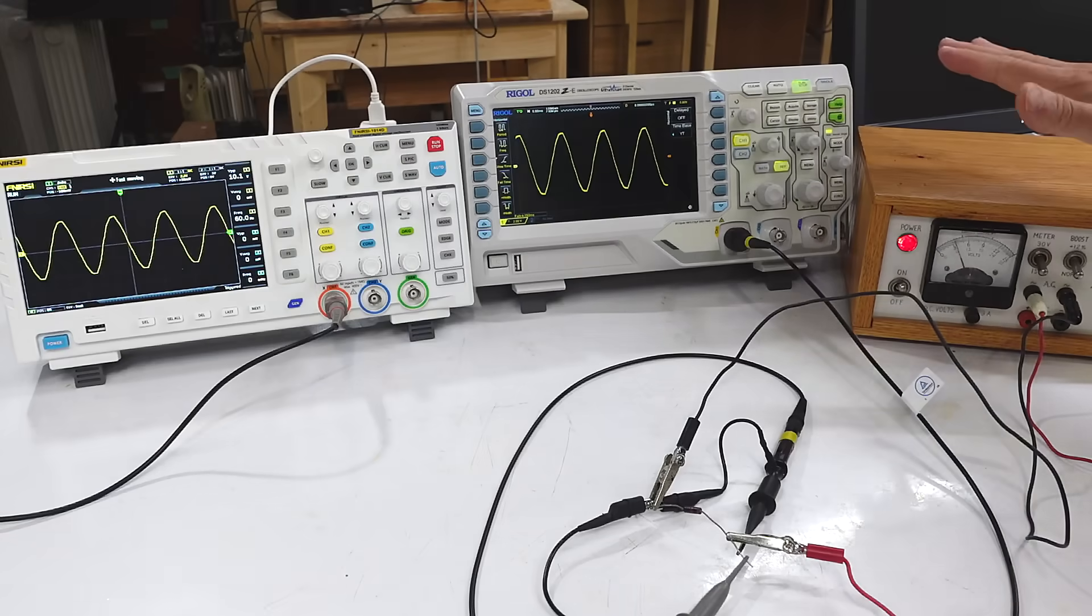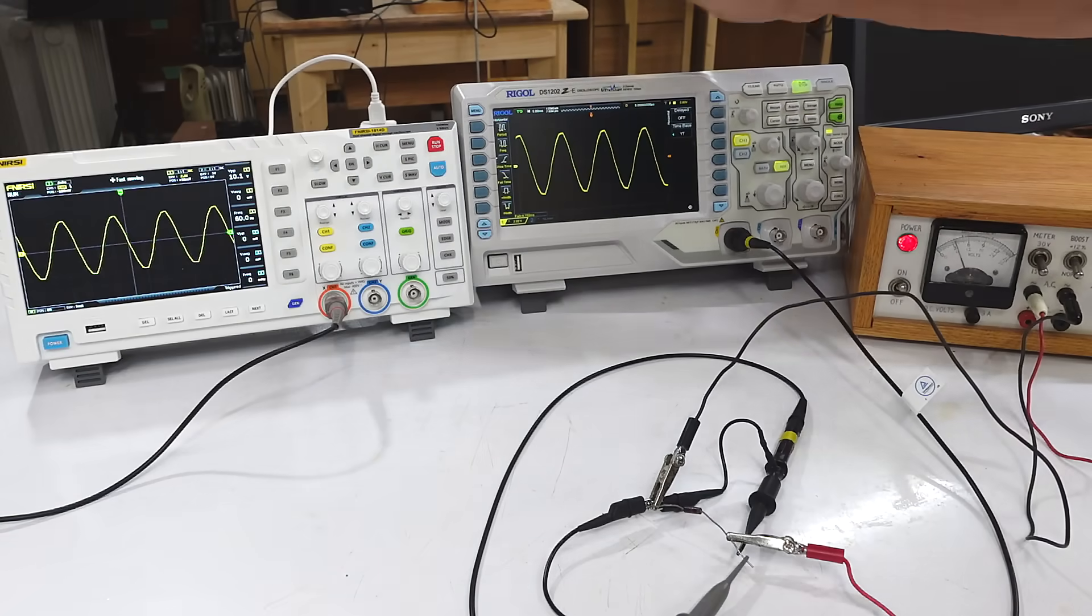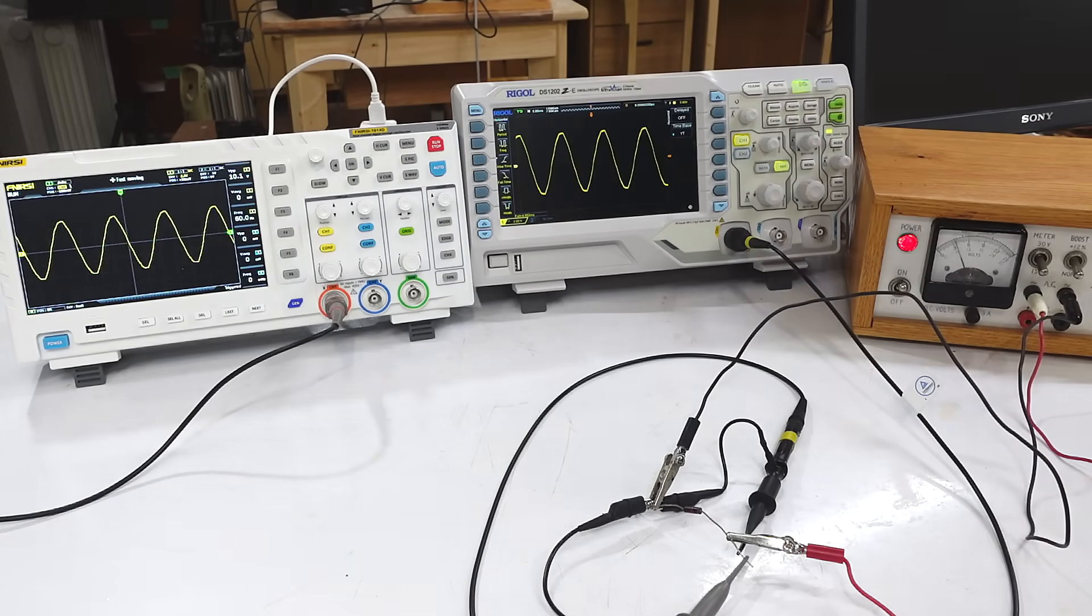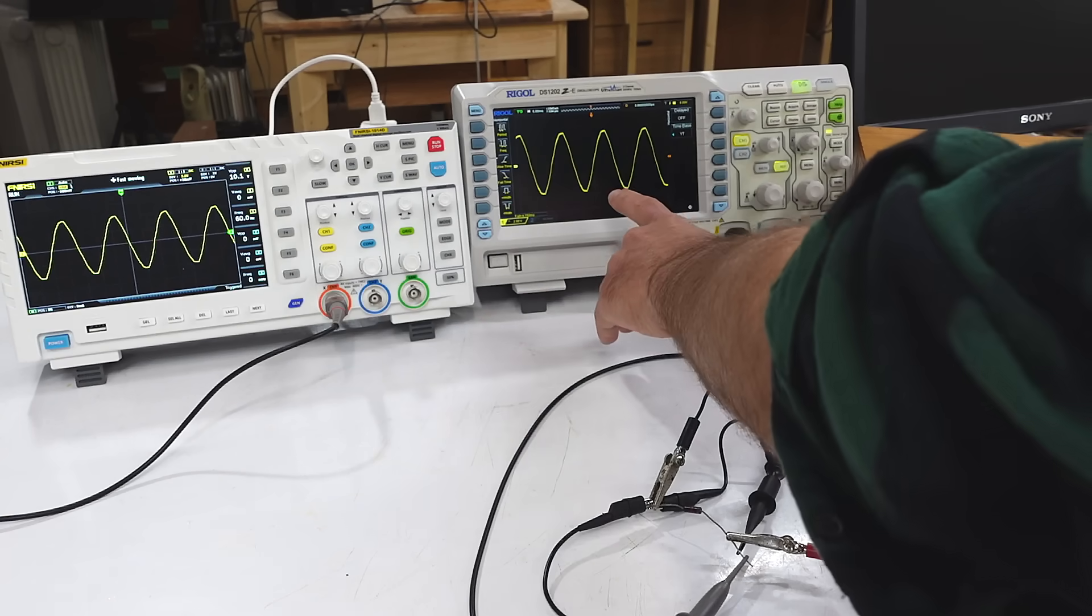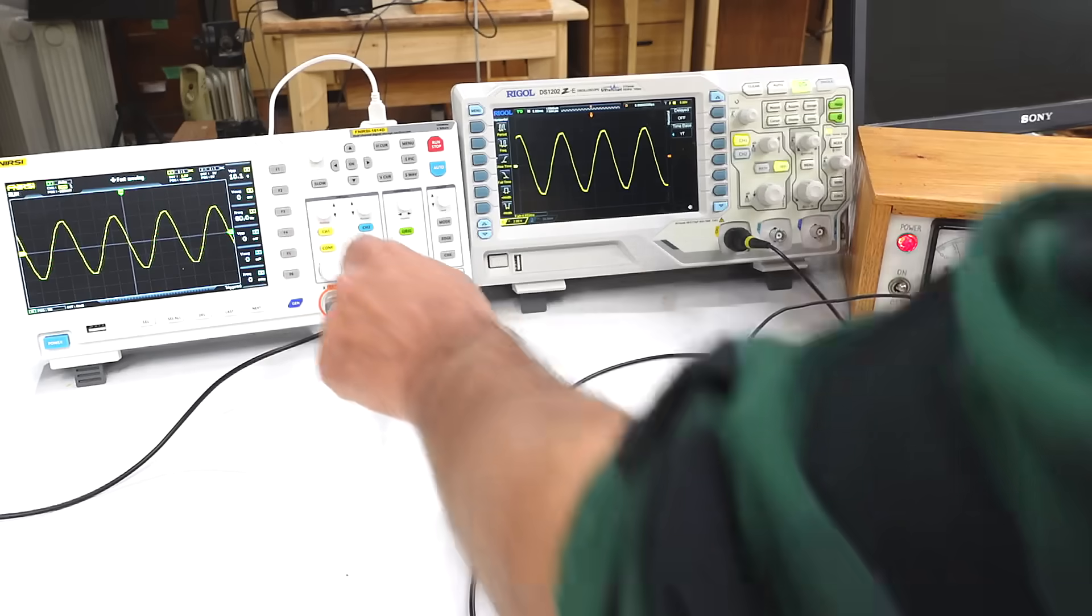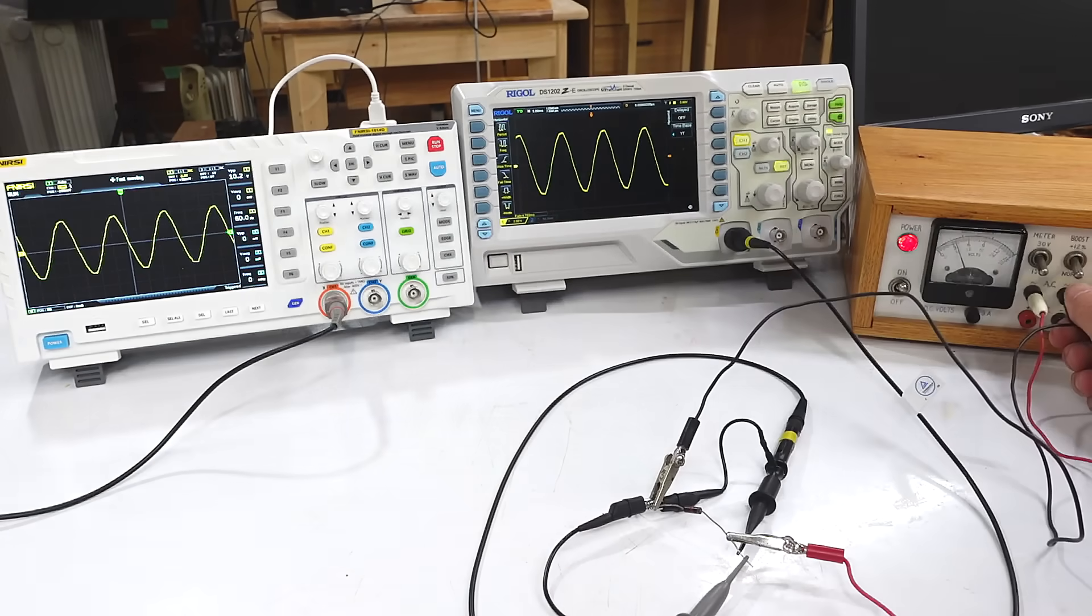And right now what I've got is 60 Hz AC from this benchtop power supply going into both of these. And if I'm looking for, say, some kind of a glitch where the signal gets interrupted, like this, this one is much faster at displaying that sort of thing than this one is.